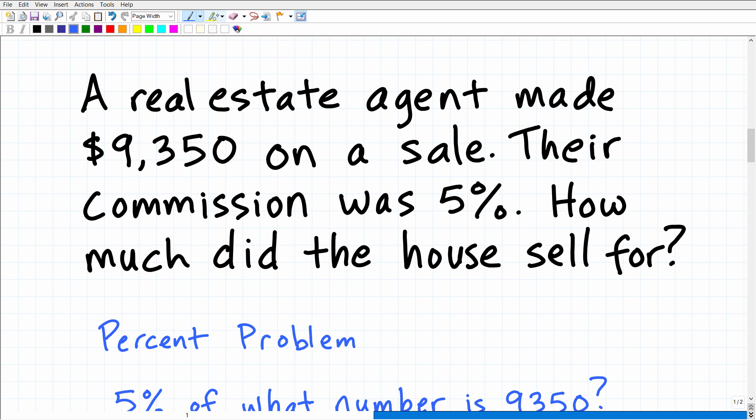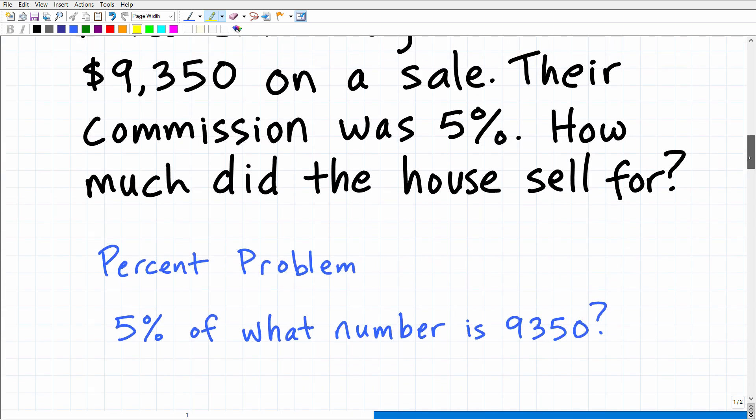So, again, this is a percent problem. What we want to do is distill this problem down into a simpler version. And really, the simpler version of this problem is 5% of what number is 9350, right? So, if this real estate agent made this amount of money, $9,350, on 5% commission, a commission, as you know, if you sell a house, they're going to get 5% off that sale price of the home as their paycheck, if you will. And, in this case, it was 9350. So, what we're trying to figure out is 5% of what number. Of course, this number, this mystery number right here that we're looking for is, in fact, the sales price of the home.